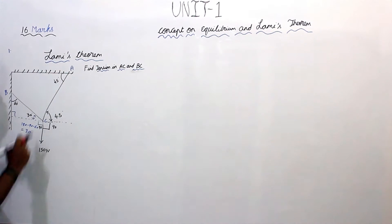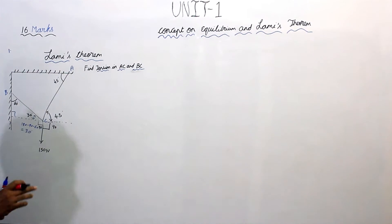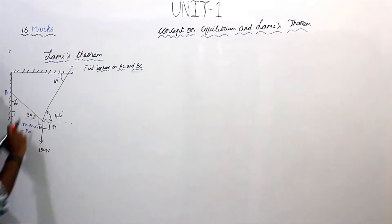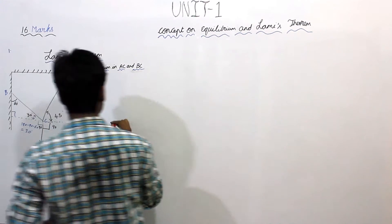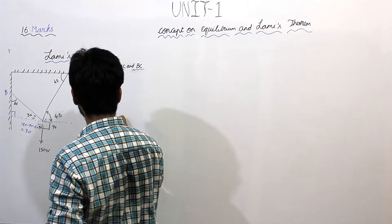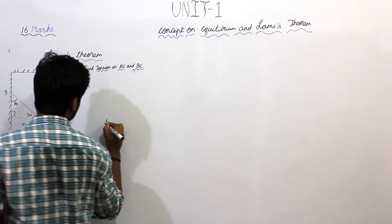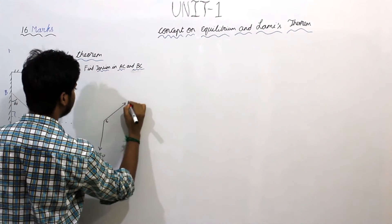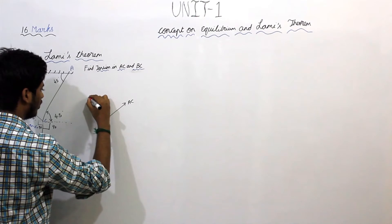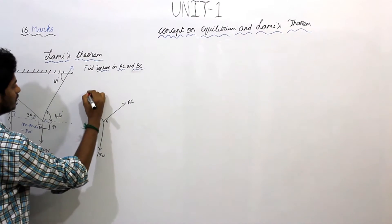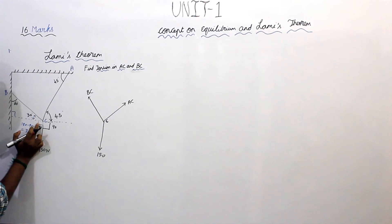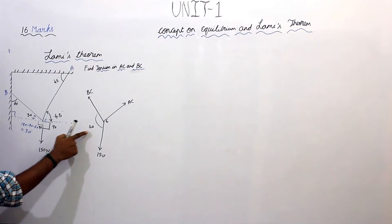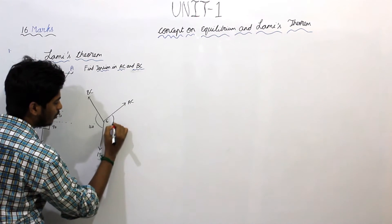The sum of angles in a circle is equal to 360 degrees. So if we calculate 360 minus the other angles, this is point C. The three forces acting at point C are: weight 150 N, tension in AC, and tension in BC.